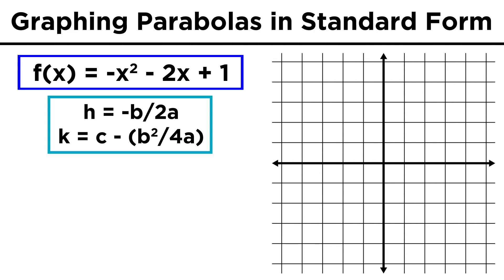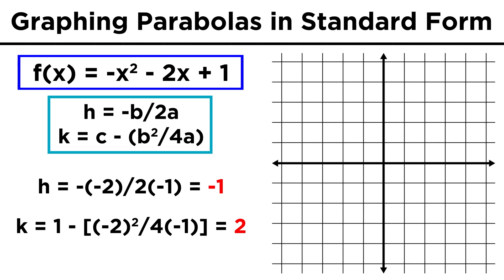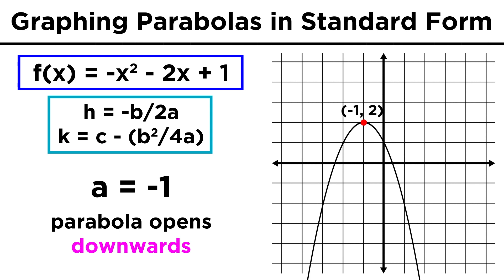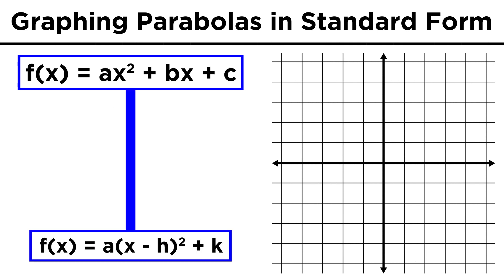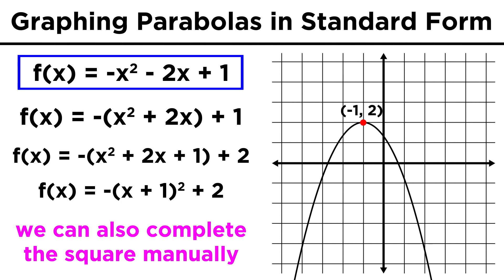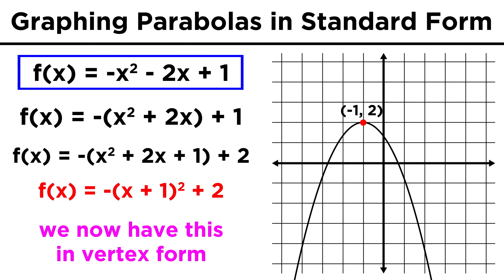Let's take our particular parabola and use the a, b, and c values to evaluate h and k, which gives us negative one and two as the x and y coordinates of the vertex respectively. Beyond this, a is negative one, which means that the parabola opens downwards. That's how we take a parabola in standard form and put it into vertex form so that it's easy to graph. Of course we don't have to derive this equation every time — we can just complete the square regularly with numbers: factor a out of the first two terms, complete the square being careful to compensate for this coefficient, change this to a binomial squared, and there's our equation in vertex form.